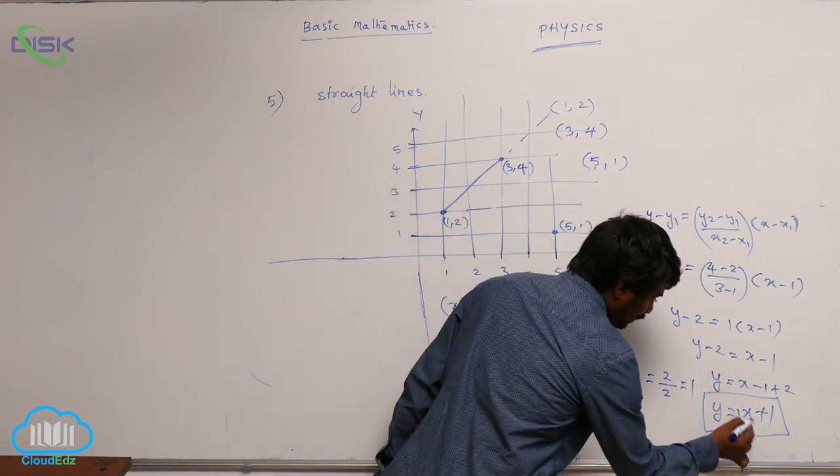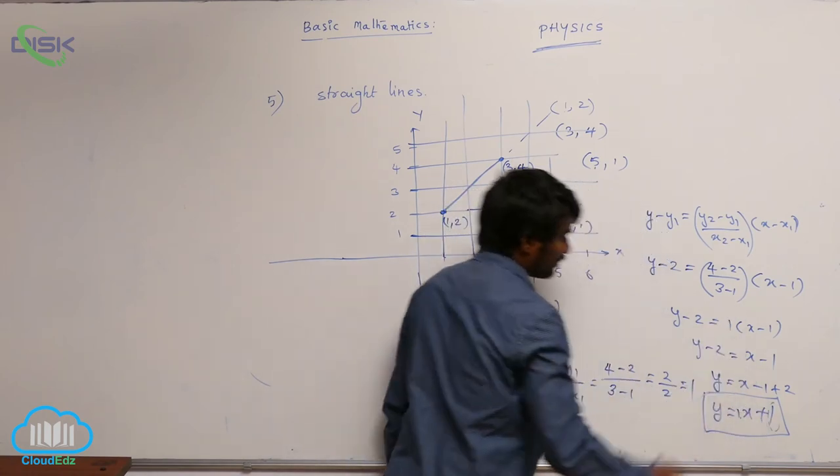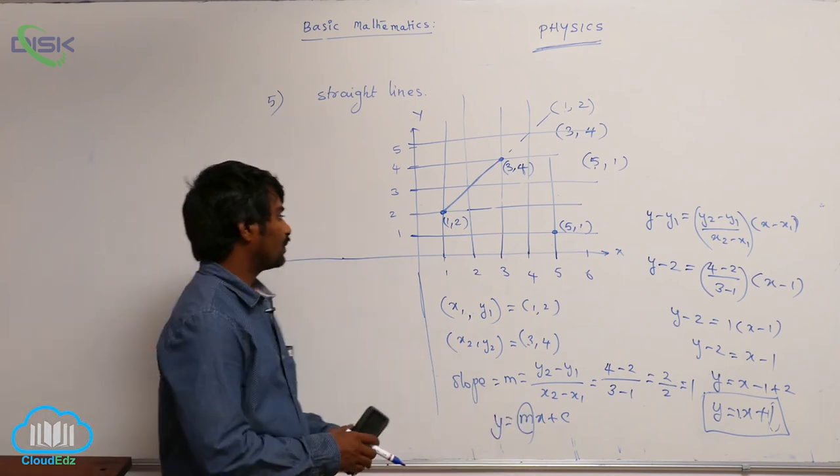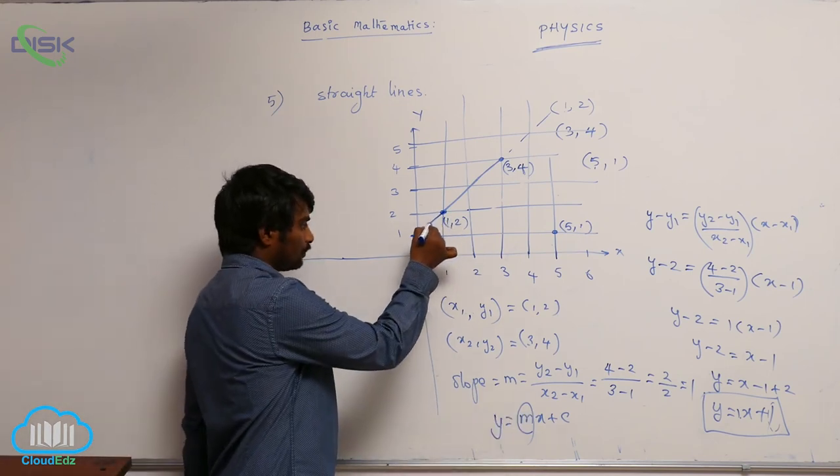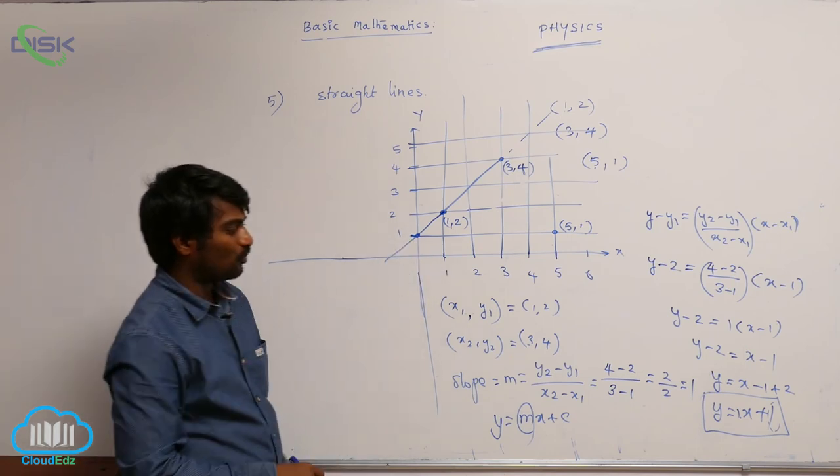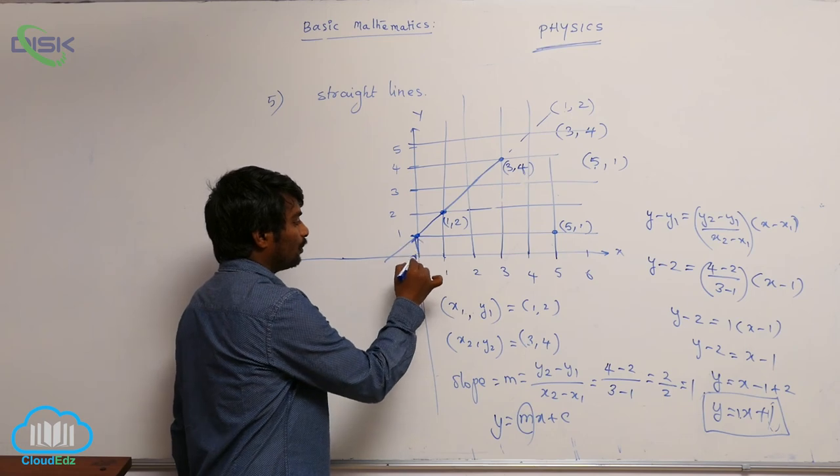So here m is 1. So 1 is the slope, and c is the y-intercept. That is, it is going to intersect the y-axis at 1. What does it mean? This value will give you...